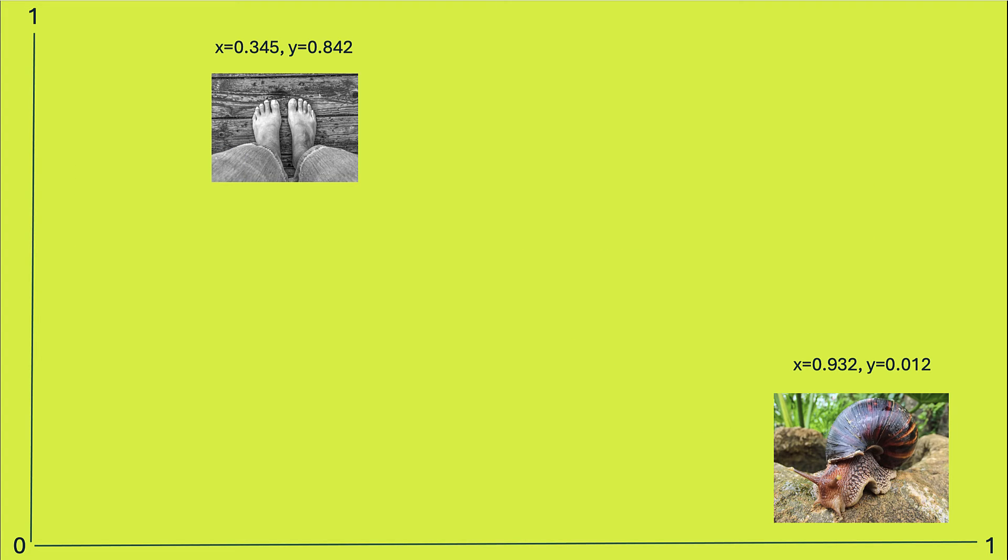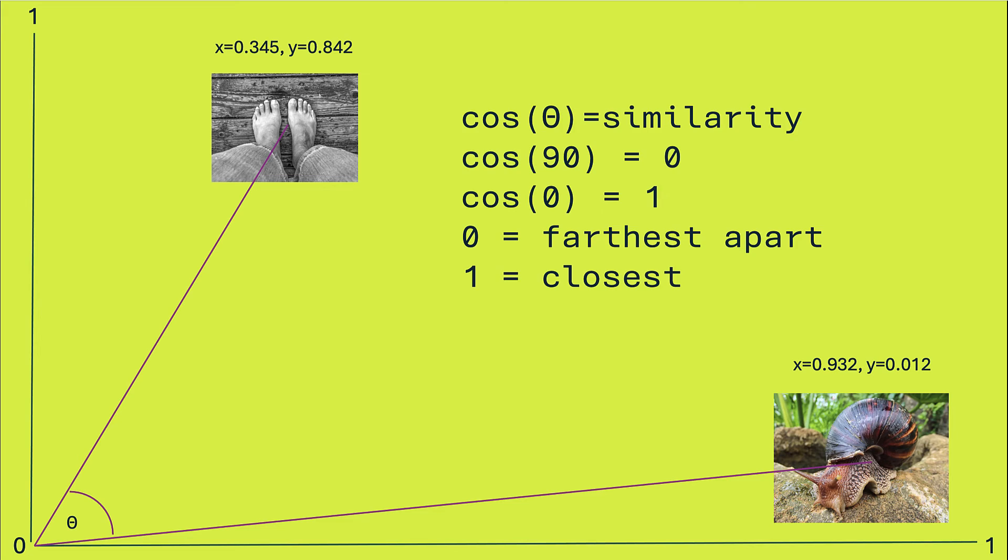Simply put, this equation draws a line from the point to zero, zero. And it does that for the two things you want to compare. And then you measure the angle between those lines and put the angle through the cosine function. That's why it's called cosine similarity. So cosine of 90 is zero. Cosine of zero is one. So the closer the answer is to one, the closer the points are.